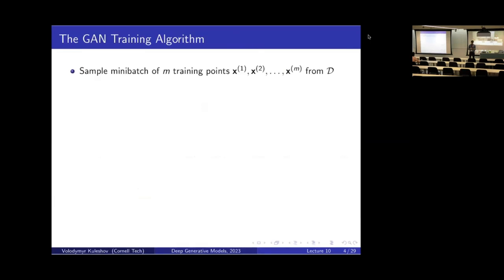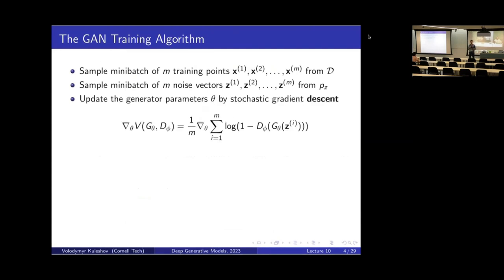Let's make the training process explicit. We start by sampling a mini-batch of training points from our training set, then sample a mini-batch of noise vectors from our prior, and pass these through our generator to get fake data — g_theta(z) is the fake data point.